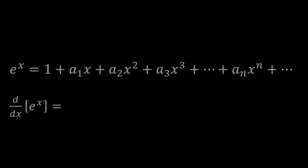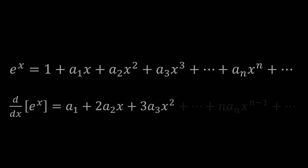Here's where the derivative comes into play. Looking at this expression for E to the x, we take the derivative term by term. The derivative of 1 is 0 — that goes away. The derivative of a1·x is a1. The derivative of a2·x² is 2·a2·x. The derivative of a3·x³ is 3·a3·x². And the derivative of an·xⁿ is n·an·x^(n−1).